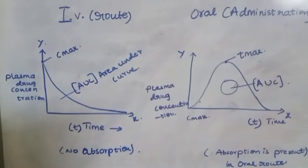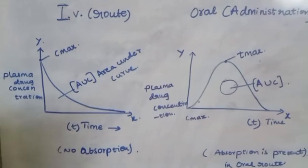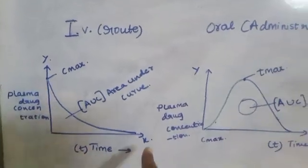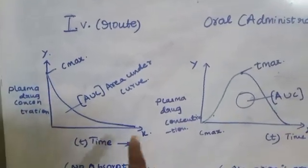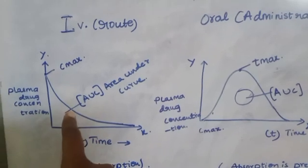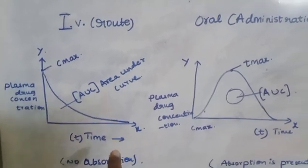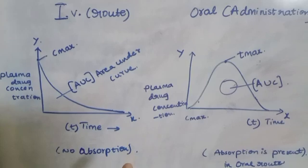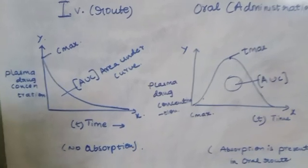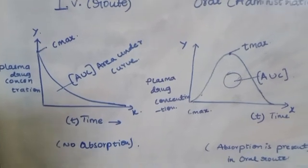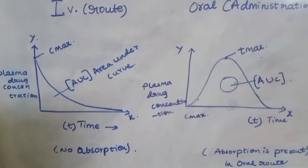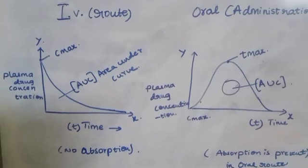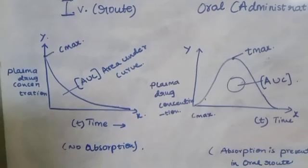We look at drug concentration and plasma concentration on the graph. If you look at the graph from the y-axis, it falls along the x-axis. When we take the drug via IV route, absorption is nil — there is no absorption phase.